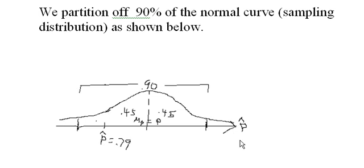That is, if we took millions and millions of samples of size 2000, they'd form a nice normal curve like this. And we partition off 90% of the normal curve as shown below.